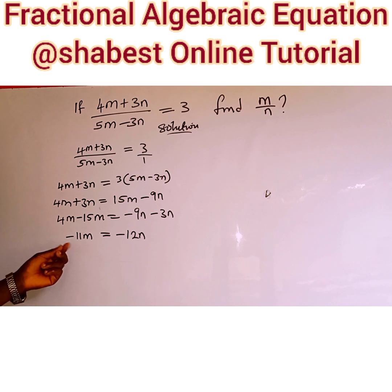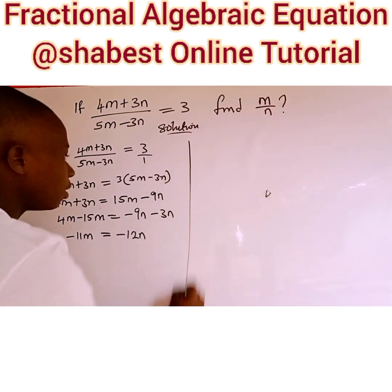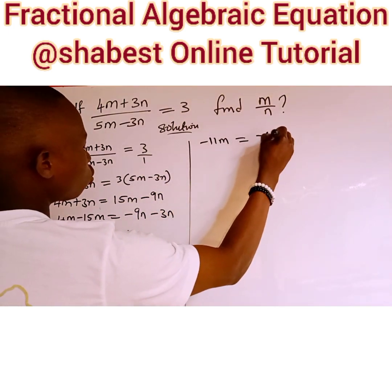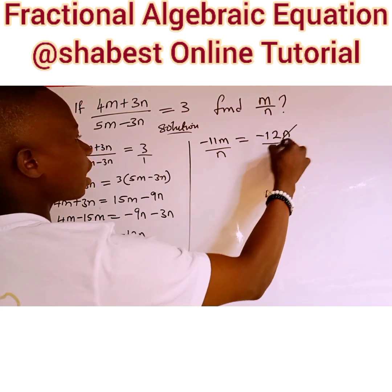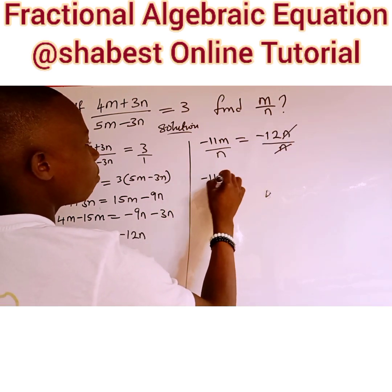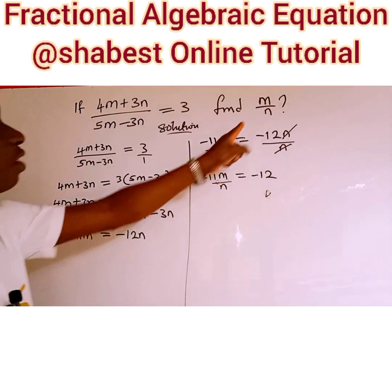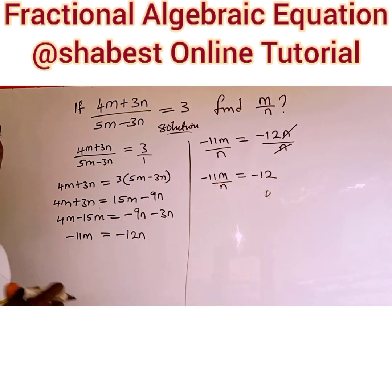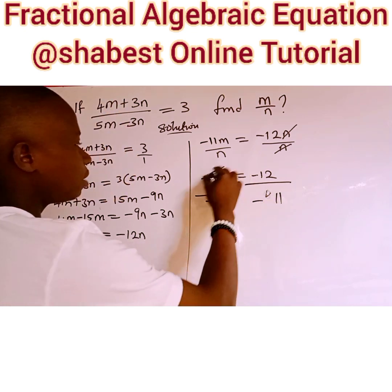So we have minus 11m equals minus 12n. Since the question asks for m over n, we divide both sides by n: this gives minus 11m over n equals minus 12. Then we divide both sides by the coefficient of m over n, which is minus 11, so that the minus 11 cancels.